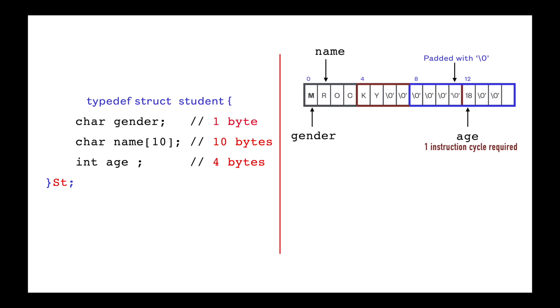Here next 4 byte aligned memory address is 12. So age will be stored from memory address 12, and memory address 11 will be filled with 0. So now only one instruction cycle would be required to fetch age. Here 0 was padded at memory 11, which is called structure padding. Hence, total size of student structure would be 16 bytes due to structure padding.